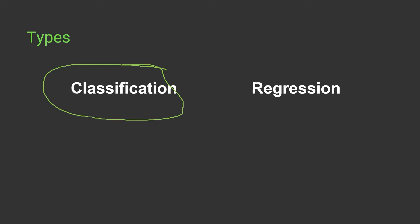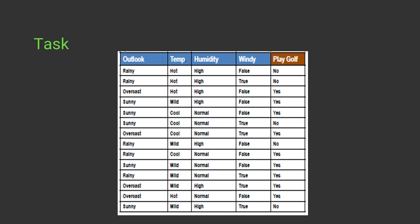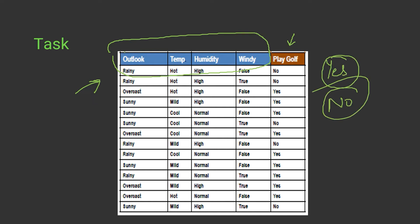For our work, let's take an example dataset. We have to predict, based on four parameters — outlook, temperature, humidity, and wind — whether a person can play golf or not. We have to prepare a decision tree so that we can reach a conclusion, classifying our data into two labels: yes or no.